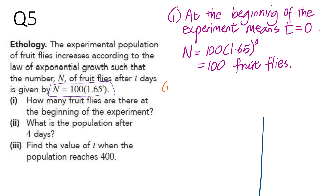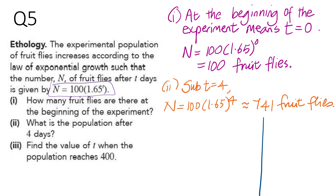Let's see what happens 4 days later. When you substitute t to be 4, use your calculator: press 100 times bracket 1.65 close bracket to the power of 4. You get 741 fruit flies. The fruit flies have increased dramatically because nothing was done about them.